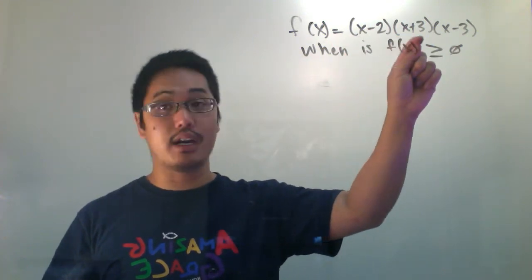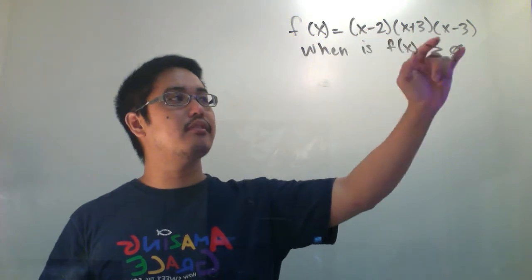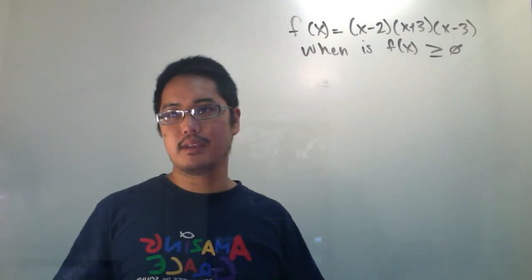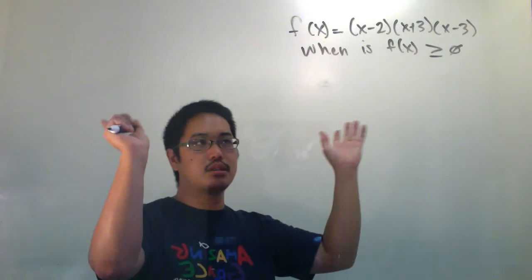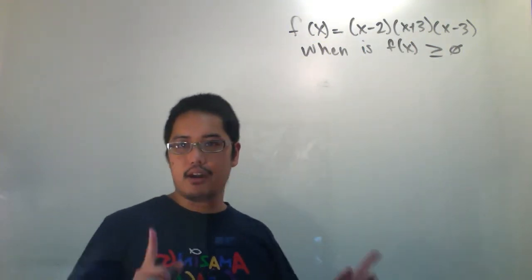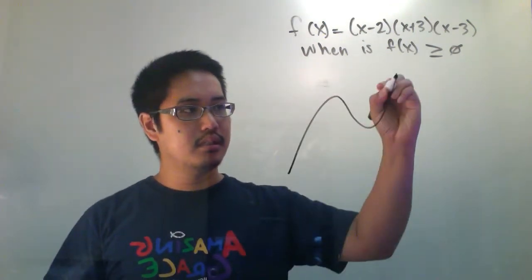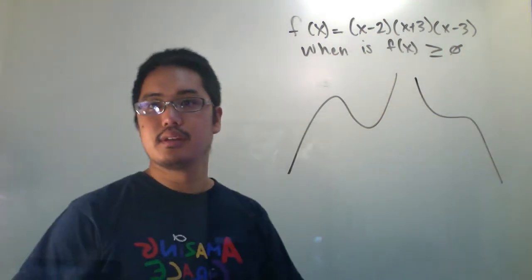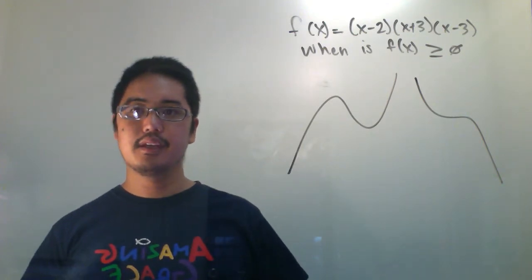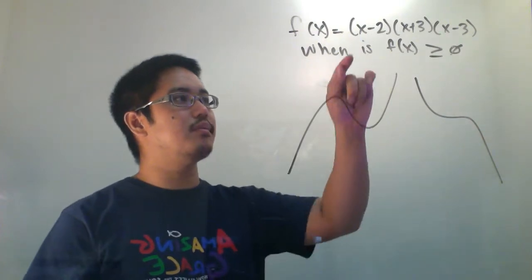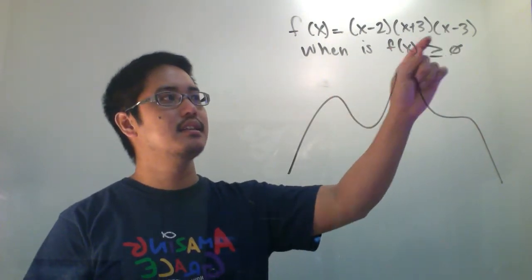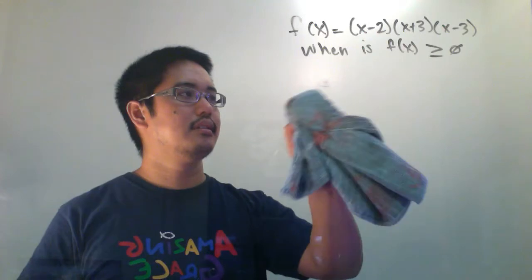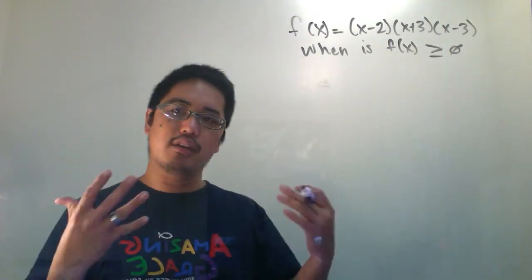If I were to FOIL the first two and then distribute in the third, I would get an x cubed term. So that's a cubic function. Now I have a question for you — is it a standard positive cubic or a negative cubic? I think it's going to be positive. I agree, because when you multiply x times x times x, those are all positive terms, so you get a positive x cubed out front.